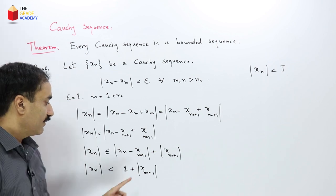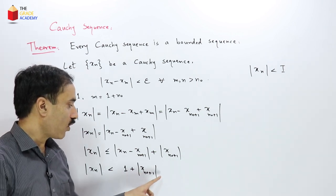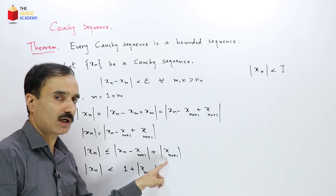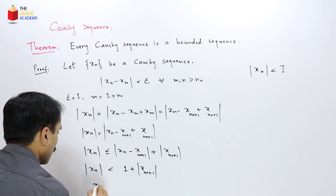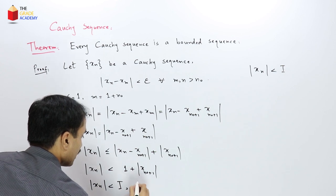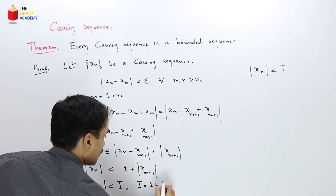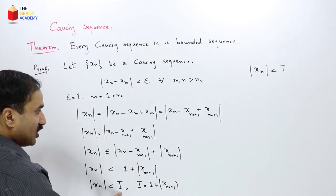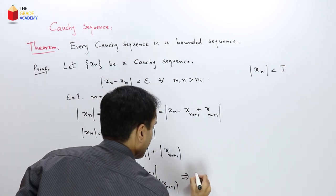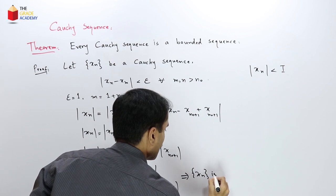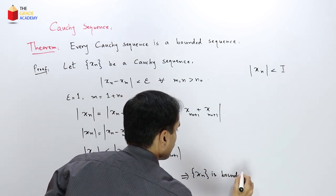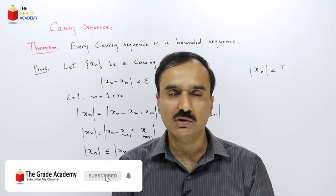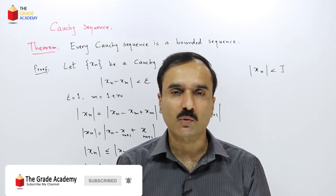Since |x(n naught+1)| is some positive real number, 1 + |x(n naught+1)| is again a positive real number. So |xn| < M where M = 1 + |x(n naught+1)|. This shows that the sequence xn is bounded. Therefore, every Cauchy sequence is bounded. I hope you have understood the definition of a Cauchy sequence — see you in the next lecture.